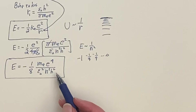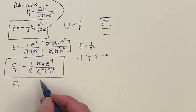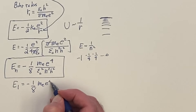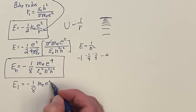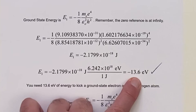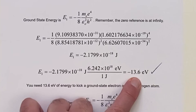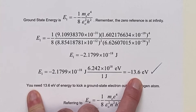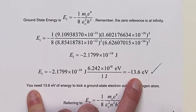For the ground state, putting in N equals 1 gives E_1 equals minus one-eighth m_e e to the fourth over epsilon-naught squared H squared. Putting in all the numbers gives the value in joules, and converting to electron volts gives the famous result of minus 13.6 electron volts — the energy needed to kick an electron out of the hydrogen atom from its ground state, ionizing the hydrogen. You go from the lowest energy up to zero, which is like being infinitely away from the proton.